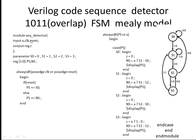Now the code. This is the Mealy sequence detector module. It has inputs X, clock, reset, and output Z which is one bit. Parameters are four states: S0, S1, S2, S3 — we declare them and assign the values 0, 1, 2, and 3.